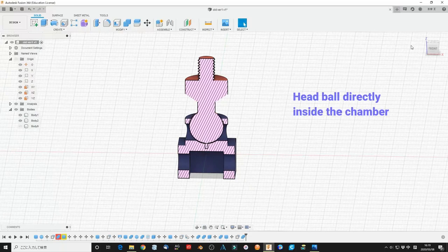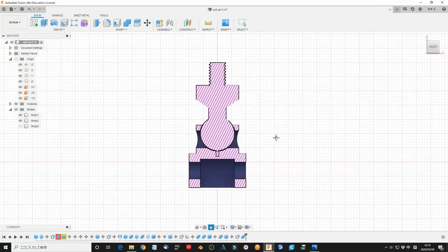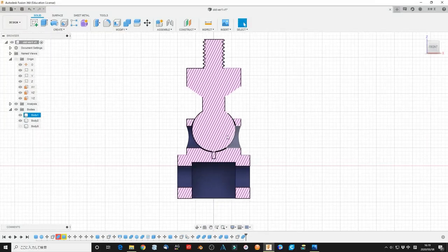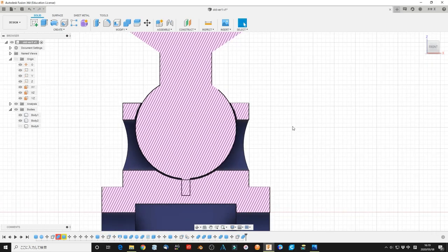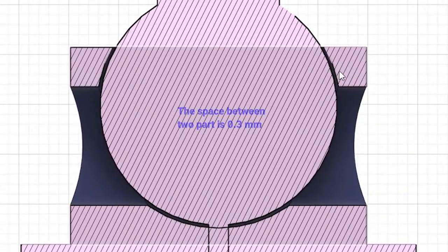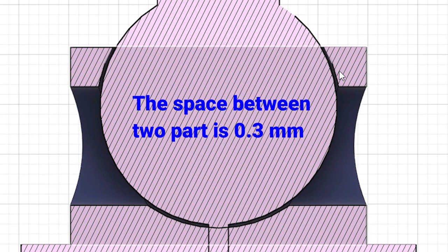The head ball is directly inside the chamber. You only need to print once without further construction. The idea seems quite brilliant, which indicates that I am so naive.